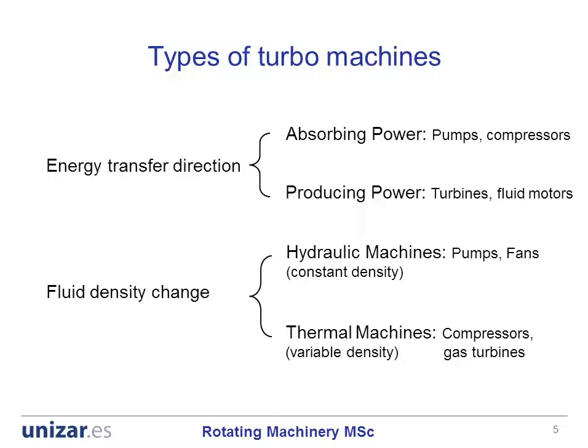The classification of turbo machinery can be tackled from different viewpoints. From an energy transfer direction viewpoint, one can talk of absorbing power machines like pumps and compressors, or power producing machines like turbines and fluid motors.